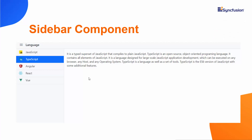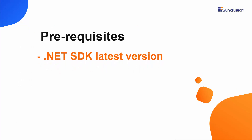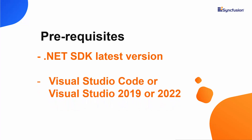Now, let's add the Syncfusion Blazor sidebar to a Blazor WebAssembly app using Visual Studio 2019. Before creating a Blazor application, I will make sure the latest version of the .NET Core SDK is installed. I should also have Visual Studio Code, Visual Studio 2019, or Visual Studio 2022 installed. With that confirmed, we can start building the app.